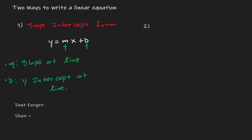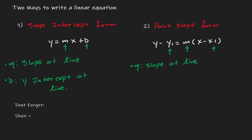The second form is the point-slope form, which has the following form: y minus y1 equals m times the quantity x minus x1. To use this form, we need three values: the value of m, the value of x1, and the value of y1, where m is still the slope of the line and x1,y1 is just a point on the line.